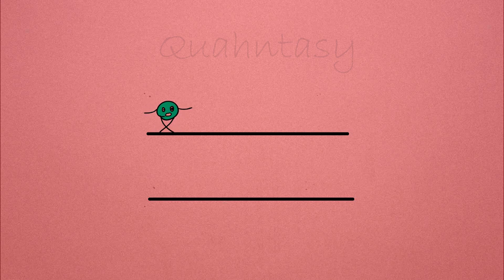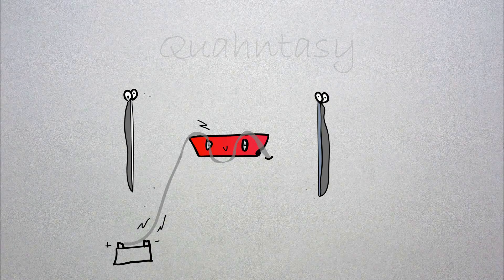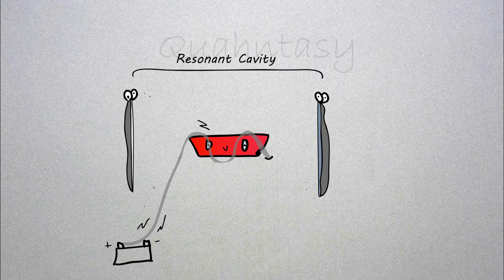This arrangement of reflecting mirrors is what is known as a resonant cavity. Only light of a particular wavelength can exist inside the cavity. How can we make sure of it? By modifying the length of this cavity.